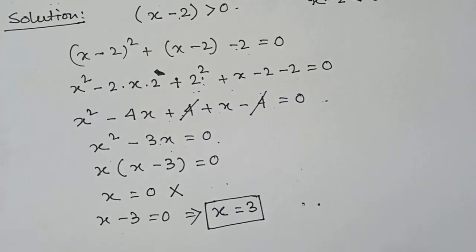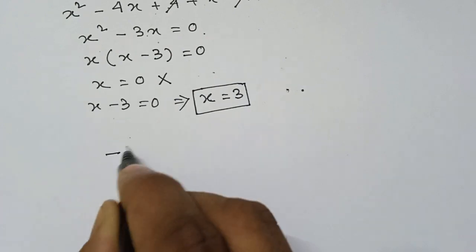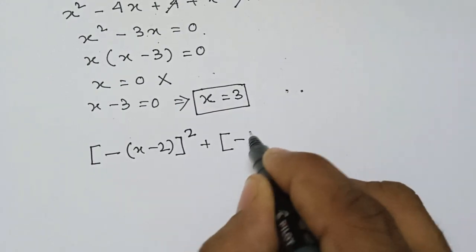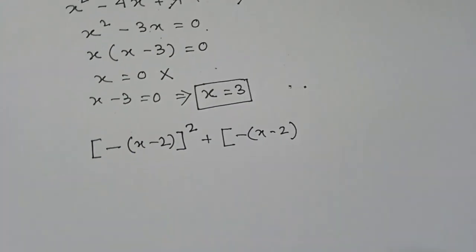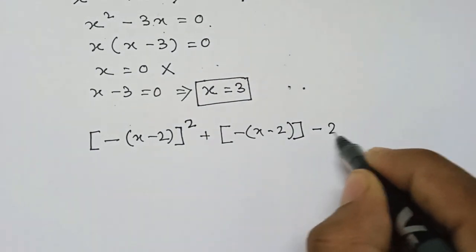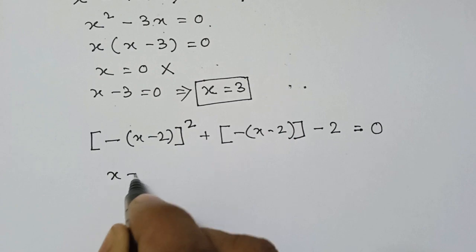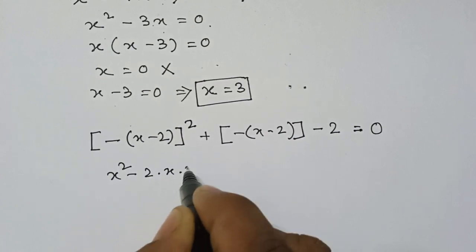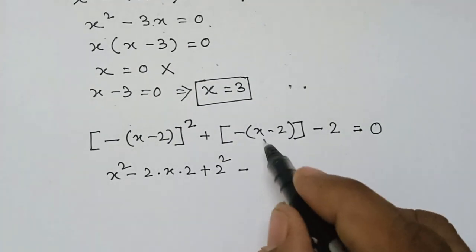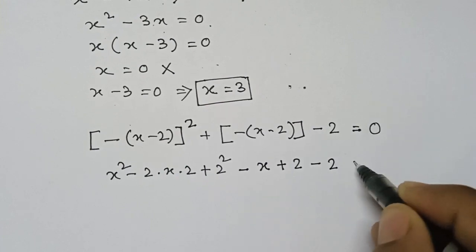Now let us consider the second case when x minus 2 is less than 0. Then this equation will become: minus (x minus 2) whole square plus minus (x minus 2) minus 2 equals 0. Since the minus is squared it becomes positive, giving x squared minus 2 times x times 2 plus 2 squared, but this minus multiplied with the plus becomes minus (x plus 2) minus 2 equals 0.